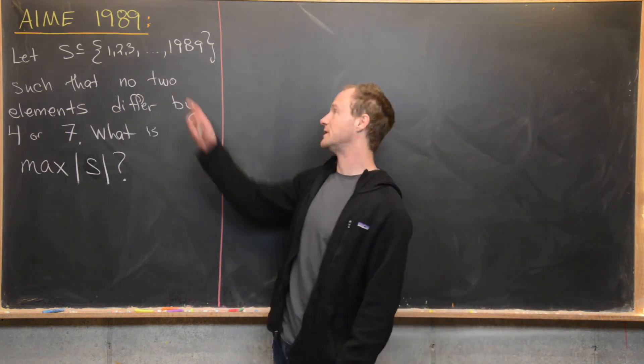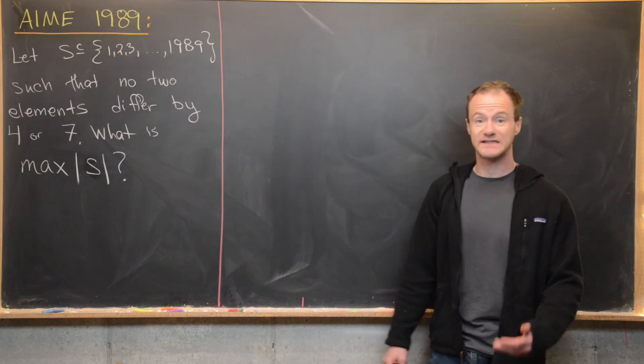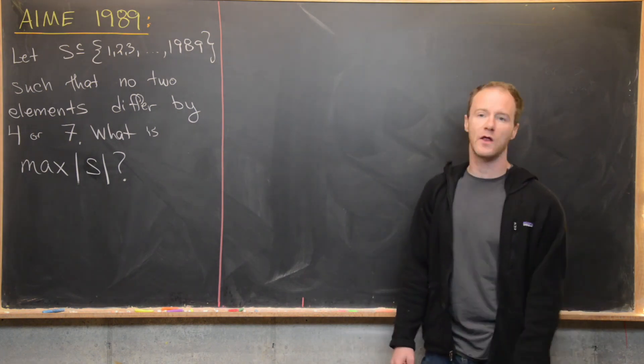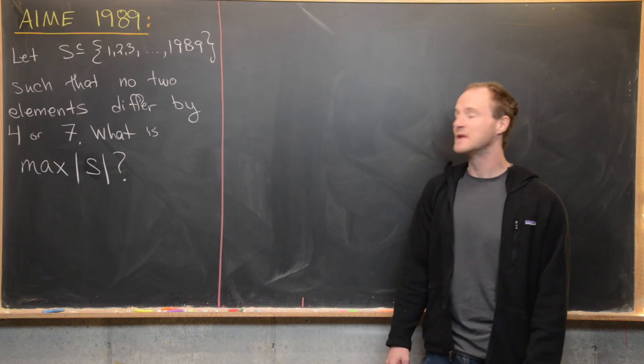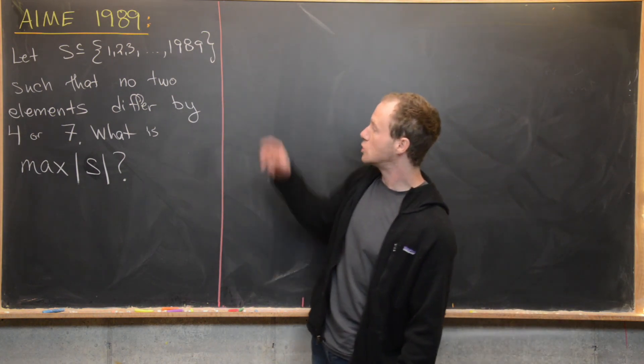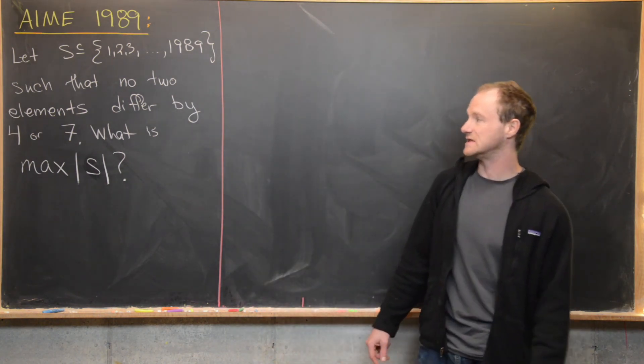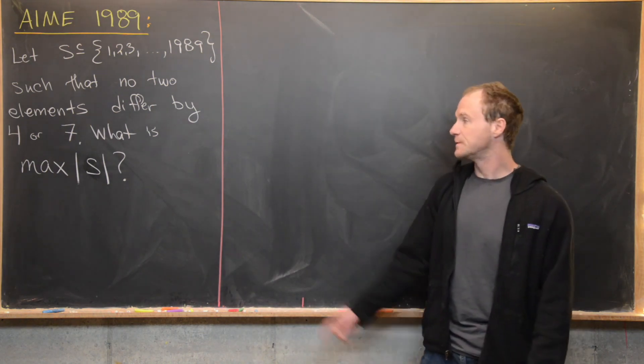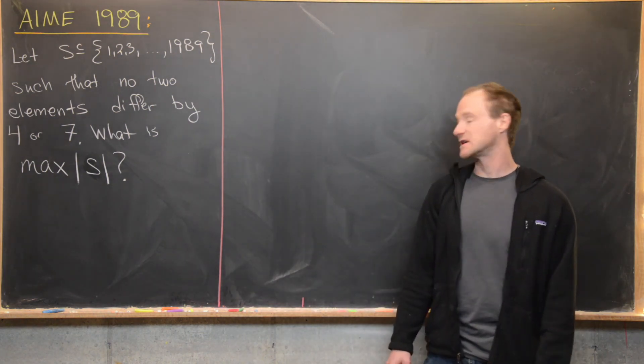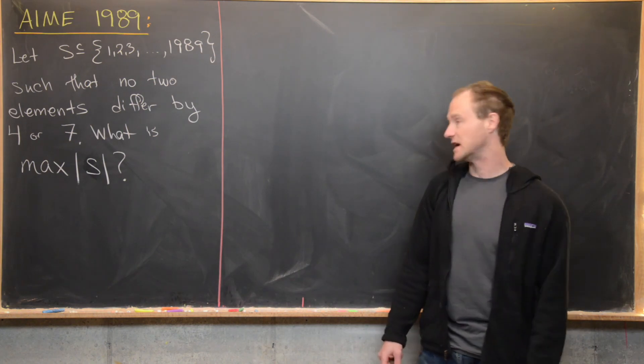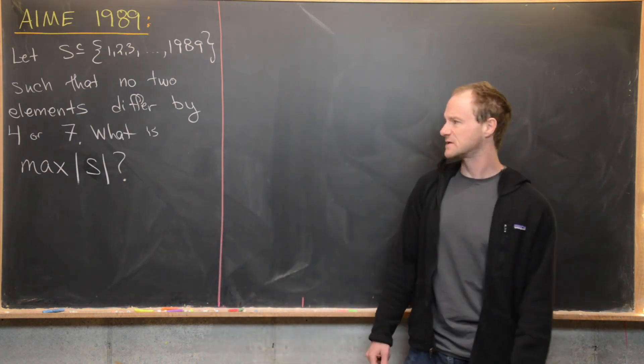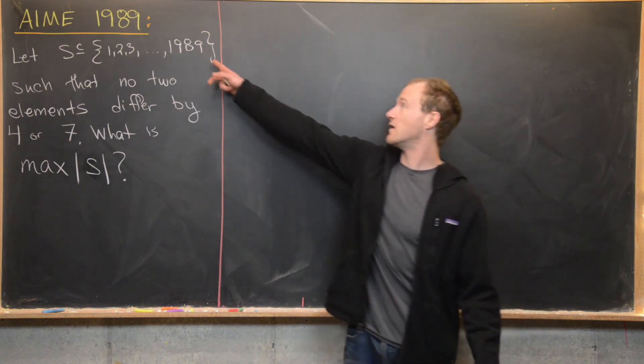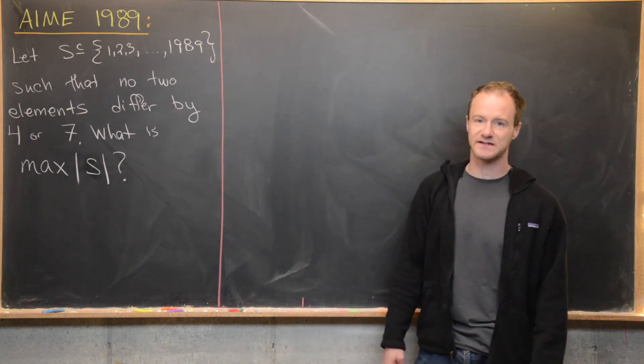We want to let S be a subset of the set of natural numbers given by 1, 2, 3, 4, all the way up to 1989. And it satisfies the following rule: no two elements from S differ by 4 or 7. And then what we want to do is find the maximum possible size of S, in other words, the maximum cardinality of S, as S ranges over all subsets of this set satisfying this condition.